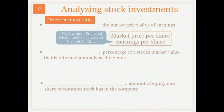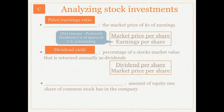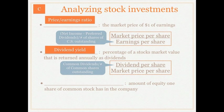The second ratio is the dividend yield. The dividend yield is the percentage of a stock's market value that is returned annually as dividends. To calculate it we take the dividend per share — which is common dividends divided by the number of common shares outstanding — and divide that by the market price per share.